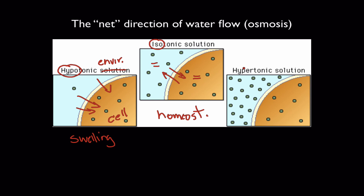In a hypertonic environment (hyper = higher), the concentration of solutes outside the cell membrane is higher than inside. The net effect is to pull water out as it tries to hydrate all the solute molecules outside, making this a shrinking or shriveling environment — cells will shrink. These three terms are useful for explaining why water is flowing in the direction that it's flowing.